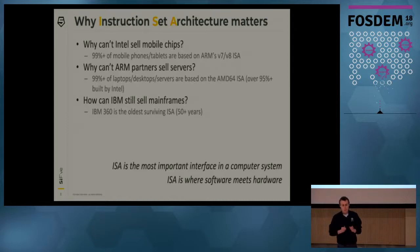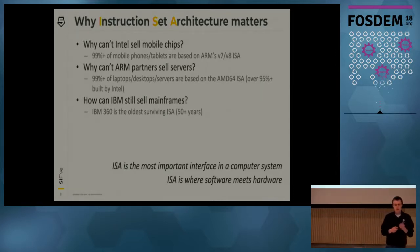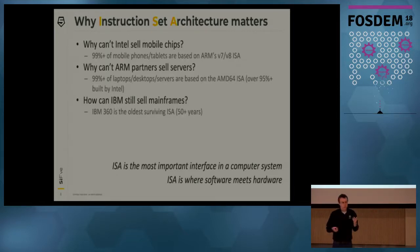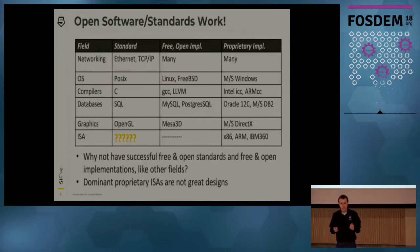Why are ISAs important? The ISA is the most important interface in the computer. It's the reason that Intel can't break into the mobile market, because the mobile software is largely ported for ARM systems. Similarly, it's the reason that ARM can't move into the server market, because server software largely expects Intel systems. IBM's 360, the longest-lived ISA, has been around for 50 years and will probably outlive all of us. There is no free and open ISA.